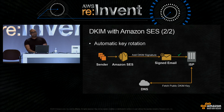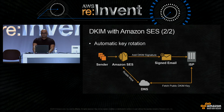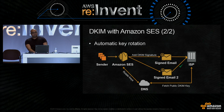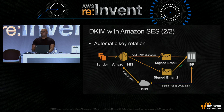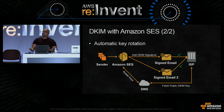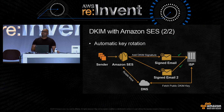Sometime later, SES will rotate those keys and publish a new set of records into DNS. When you give us a second email to send, we will sign it with the new key and it will make its way over to the ISP, which will fetch the updated public DKIM key to validate that second email. But what about the first email if it's delayed or the ISP wants to revalidate later? Because we asked you to publish three CNAME records for DKIM signing, we can keep the old keys around after we start using the new keys. Therefore, old emails can still be validated for some period of time even though we're now using the new keys.